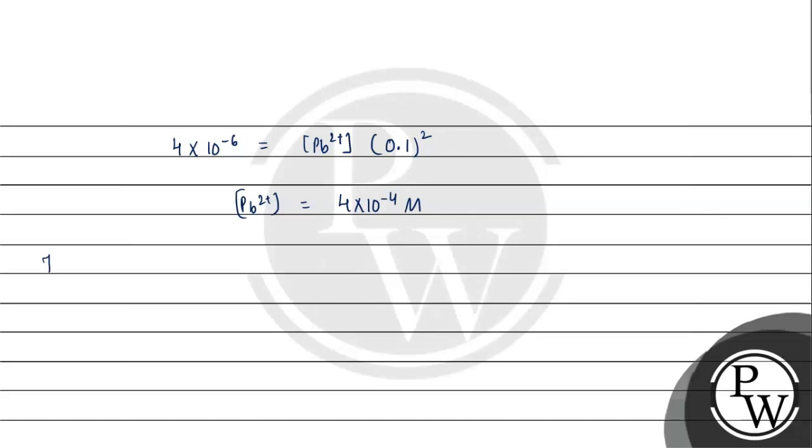The final answer for this question is: maximum concentration of PbCl2 in 0.1 molar NaCl is 4×10^-4 molar. Perfect. I hope you understood it well. Thank you and all the best.